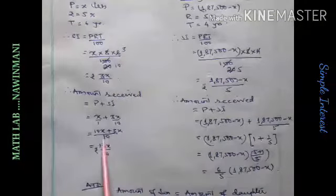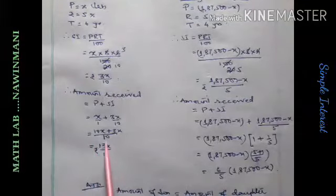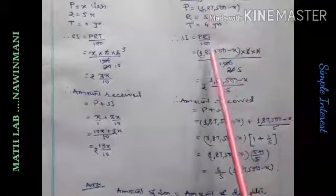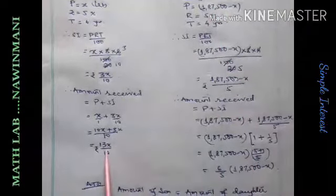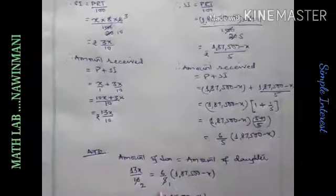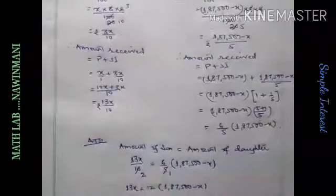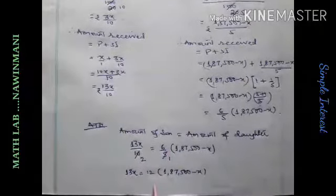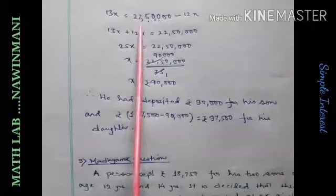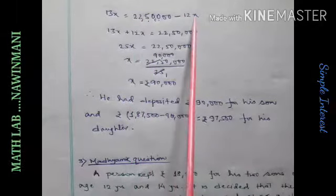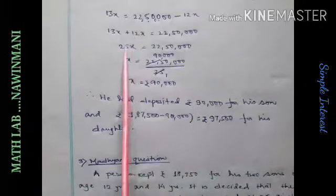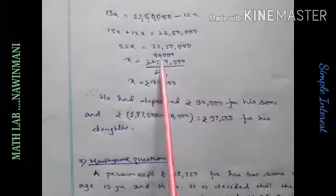Son receives after 6 years this amount when he reaches 18 years. Daughter receives after 4 years when she reaches 18 years this amount. And according to the question, son and daughter receive equal amounts. So, these two will be equal. Multiply. Then you get 13x equals 22,50,000 minus 12x. So, minus 12x comes this side, plus 12x. You add them. You get 25x. And 25 comes down. And then you cancel. You get 90,000.